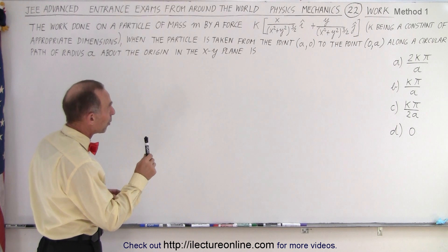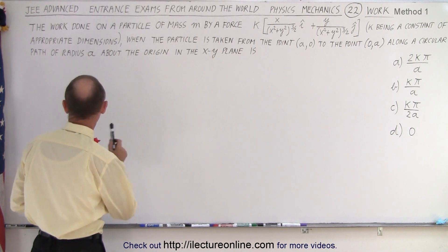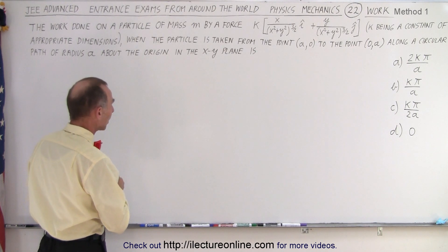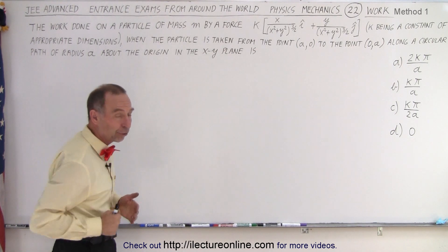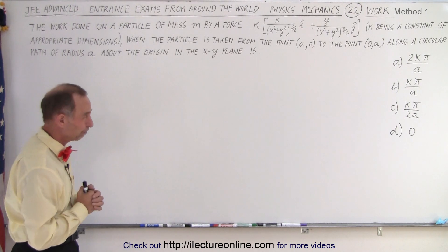When the particle is taken from point A0 to point 0A along a circular path of radius A about the origin in the XY plane, they give us four possible answers for the work. One of them being zero.